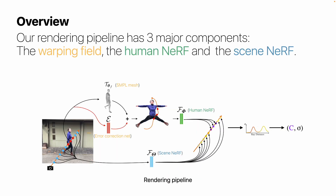To render a pixel, we shoot a ray from the camera center to the scene and generate samples along the ray. For the samples far away from the human, we feed them to the scene NeRF model.